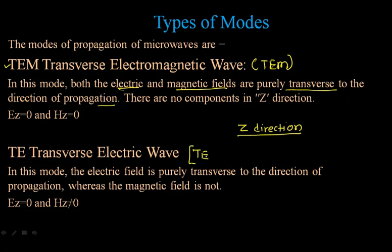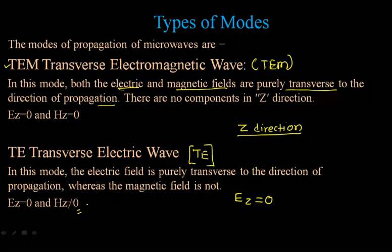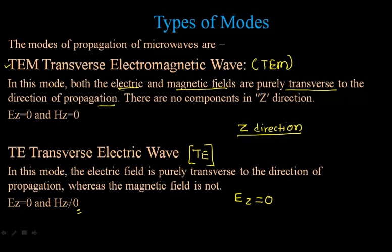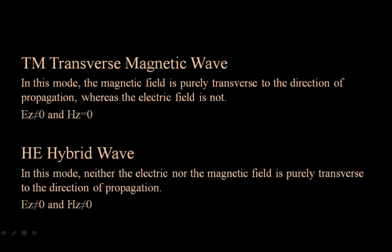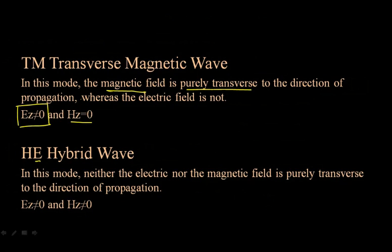The second mode is the TE (transverse electric) mode. In this mode the electric field is purely transverse to the direction of propagation, meaning Ez = 0 but Hz ≠ 0. The third mode is the transverse magnetic (TM) wave: the magnetic field is purely transverse to the direction of propagation, so Hz = 0 and Ez ≠ 0.